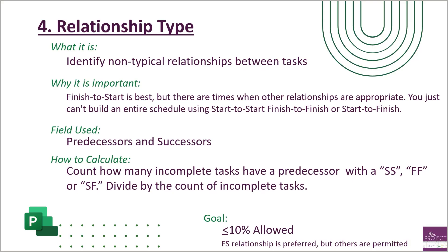To recap the relationship type metric: we're looking at non-typical relationships between tasks. Every task has a relationship — this metric identifies whether it's the default finish-to-start or a non-typical one such as start-to-start, start-to-finish, or finish-to-finish. We look at the successor and predecessor fields, sum up the non-typical ones, divide by incomplete tasks, and make sure it falls under 10%.